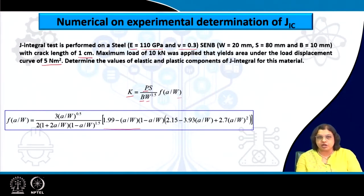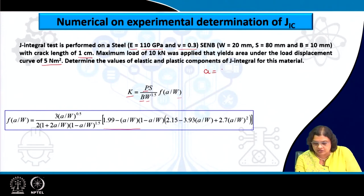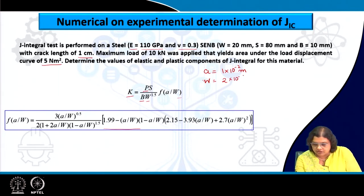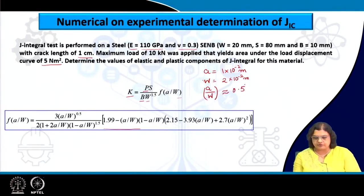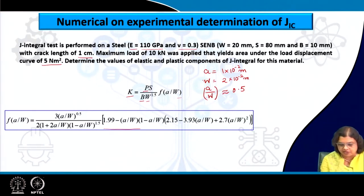First, let us determine the ratio of a/w. The crack length is given as 1 centimeter, which is 1×10⁻² meter, and w is 20 millimeter or 2×10⁻² meter. This makes a/w equal to 0.5. Now let us determine f(a/w) first — although it looks scary, this is just simple high school level mathematics.